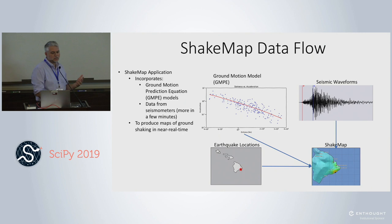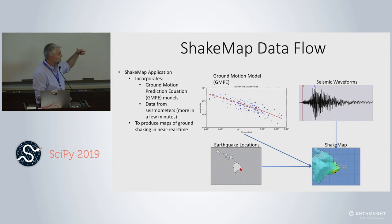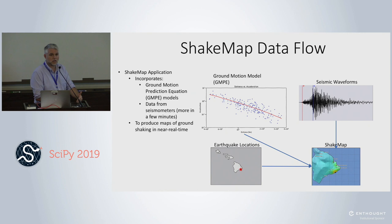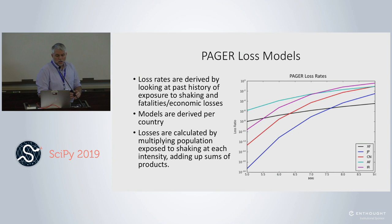The data flow for ShakeMap is: take ground motion prediction models created as scientific research, grab peaks from seismic waveforms in real or near-real time, combine with earthquake location and Did You Feel It data, and produce a map of ground shaking. We make maps of acceleration, velocity, and Modified Mercalli Intensity covering the area surrounding the earthquake.